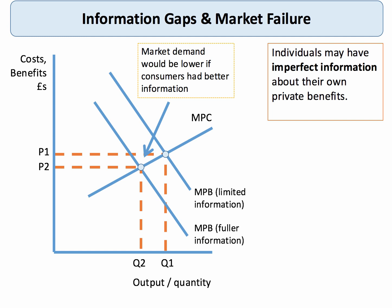Taking the example of cigarettes, the consumer may overestimate the marginal private benefits derived from smoking, so the free market equilibrium will be at Q1. But with limited information and demerit goods, the actual benefit could be less than perceived. If the consumer were better informed, demand would shift left, with marginal private benefit with full information resulting in an equilibrium level of consumption at Q2.